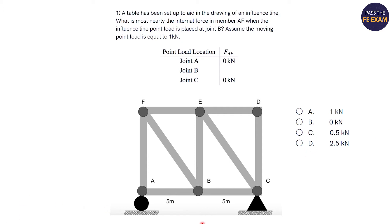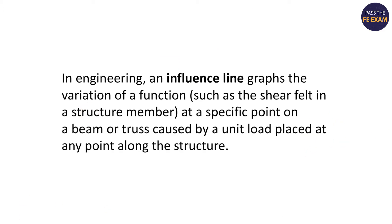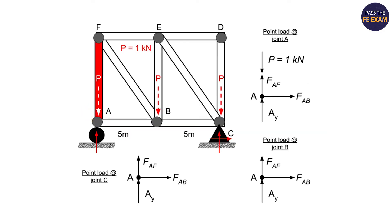So the first thing that I'd like to do here is let's talk about what an influence line is. In engineering, an influence line graphs the variation of a function such as the shear felt in a structure member at a specific point on a beam or truss caused by a unit load placed at any point along that structure. We all remember the influence lines in school. You've probably taken them before. But what I want to do is really break this down one step at a time so you can see what's going on here.